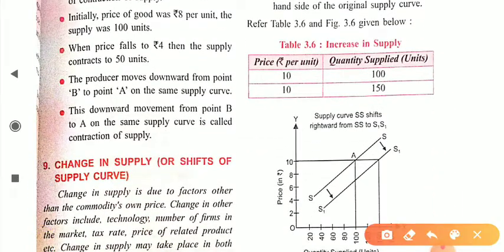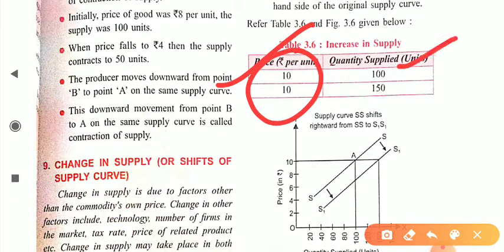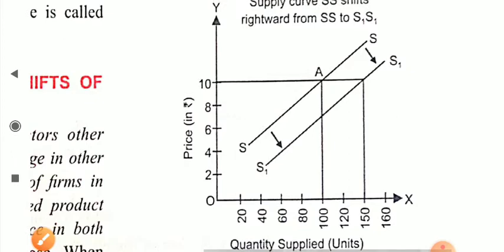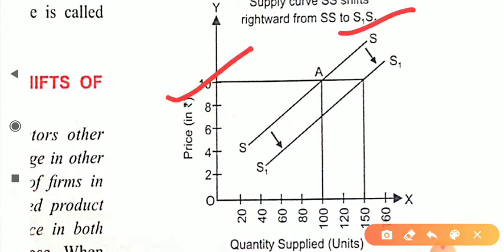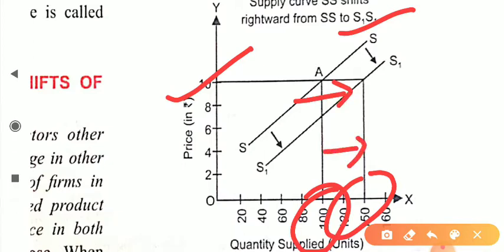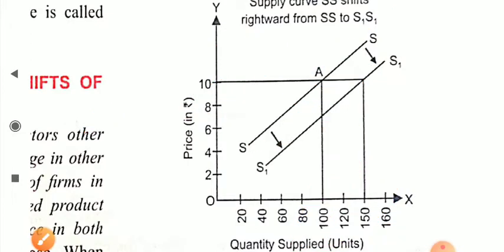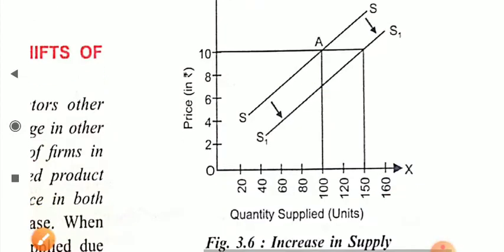From the table: when price remains constant at 10, initially quantity supplied is 100; after the change in other factors, quantity supplied increases to 150. In the diagram, the supply curve shifts from S to S1 — a rightward shift — while price remains at 10. The supply curve moves from point A to point B, which is known as increase in supply.